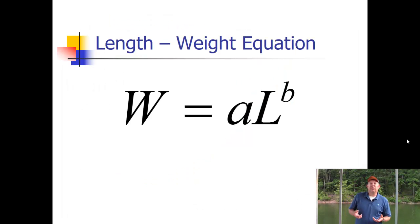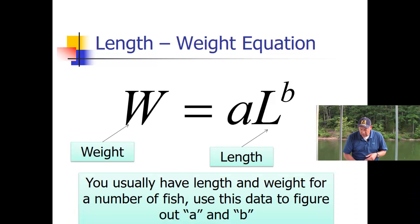This is a very simple equation that we use to relate length and weight. It's W = aL^b. This is a power equation which gives us our typical curved relationship. You usually have length and weight for a number of fish, and then you fit an equation to your existing data. You need to figure out a value of a and a value of b, and that will give you the equation for that population.